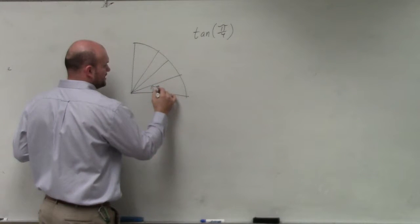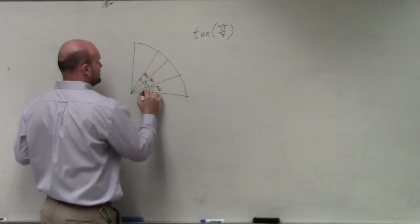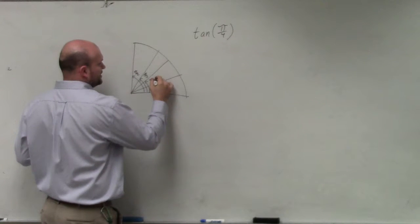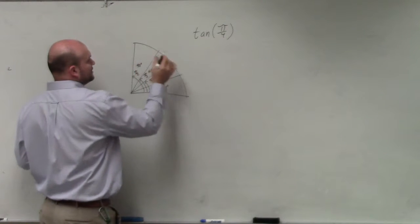Pi over 6, pi over 4, pi over 3, pi halves, which is the same thing as 30 degrees, 45 degrees, 60 degrees, and 90 degrees.